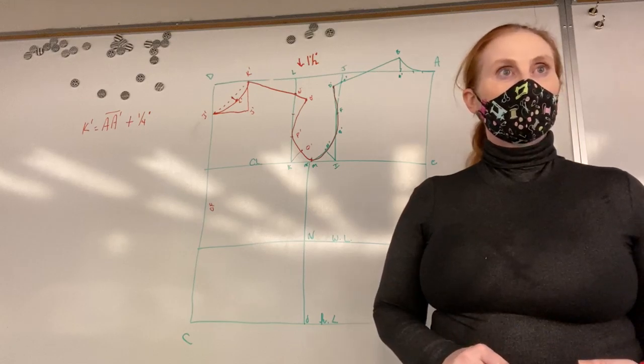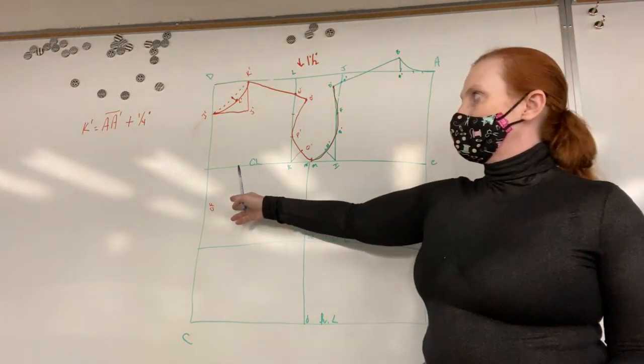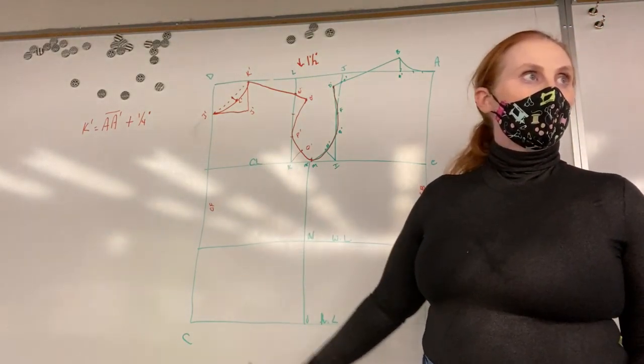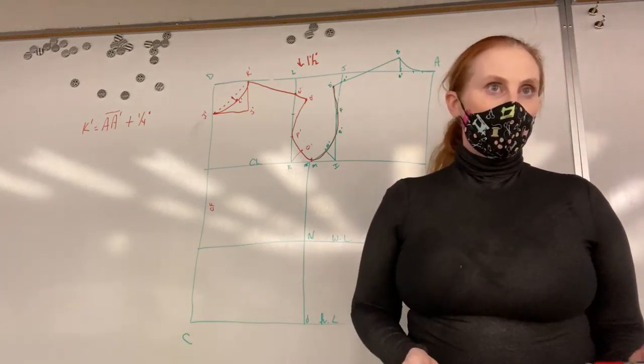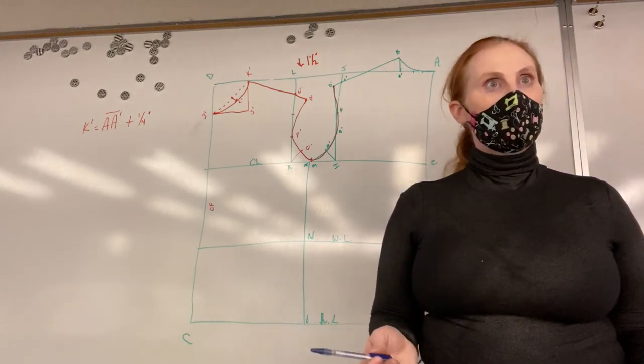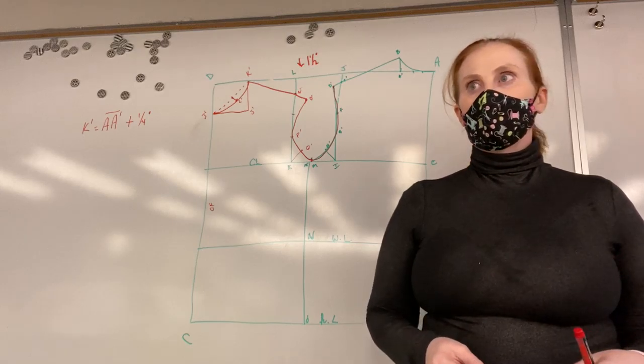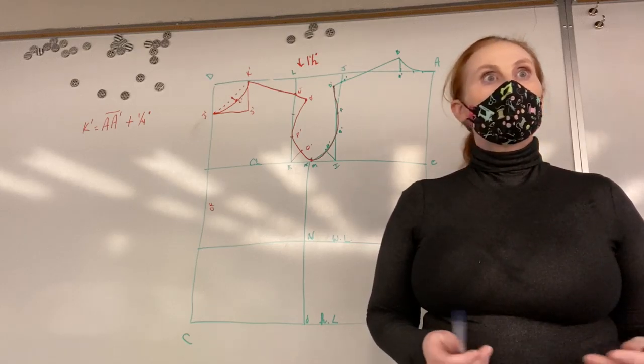They're missing any kind of labeling other than we have center front, center back, chest line, waistline, hip line. So we have that labeling, but it doesn't have your name. It doesn't have a pattern piece name. What else? How many to cut?